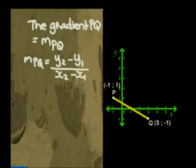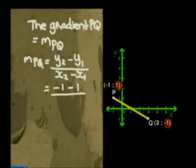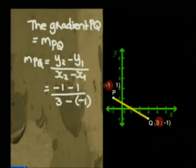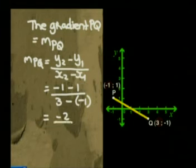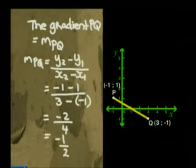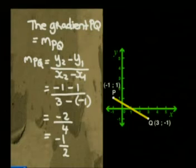If you work this one out, starting with Q's values, you will get negative 1 minus 1 divided by 3 minus negative 1. So that is negative 2 over 4, which is negative one half. The line segment has a negative gradient, so it is downhill if you look at it from left to right.